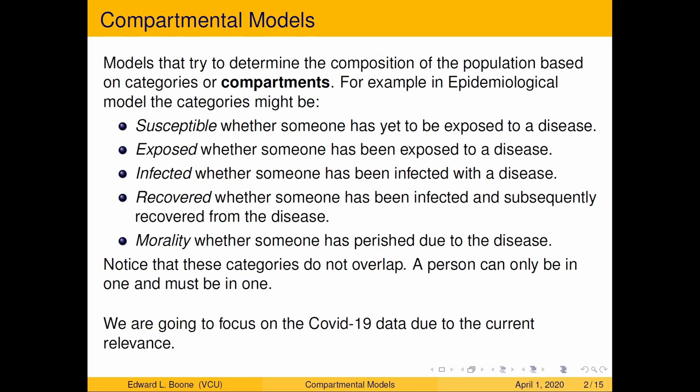So what is a compartmental model? It's a model that tries to determine the composition of a population based on categories or compartments. For example, in an epidemiological model the categories might be susceptible, exposed, infected, and recovered. Susceptible is whether someone has yet to be exposed to a disease.